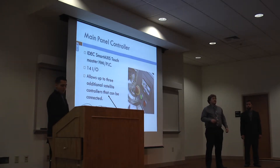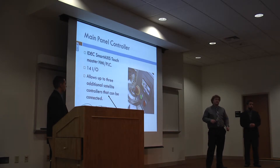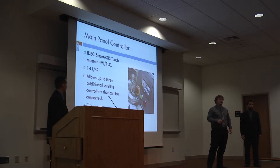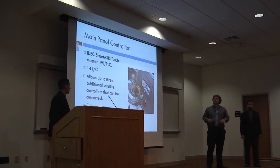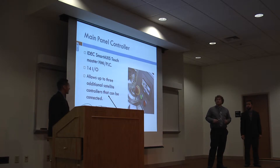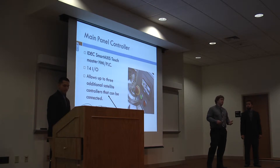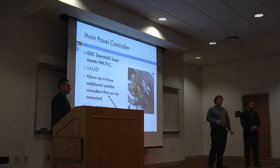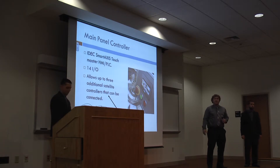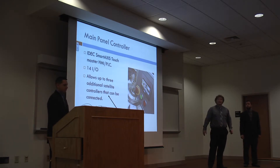For our main panel controller, we ended up going with the IDEC Smart Access Touch, which included an HMI — a human-machine interface — as you can see in the picture. It also included the PLC, which had eight inputs and six outputs, which is what we would need for our push buttons and stack light setup. It also allows for three additional controllers to be used for more inputs, and allows for ethernet to be hooked up to it, which decreases the wiring needed to connect them together.